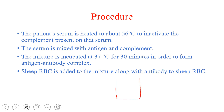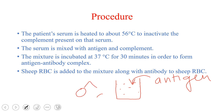After heating the patient serum at 56 degrees centigrade, we add the antigen. The serum contains the antibody, and we add the antigen to it. If there is antibody in the serum and we add the antigen, there will be formation of an antigen-antibody complex. Then we add the complement proteins.